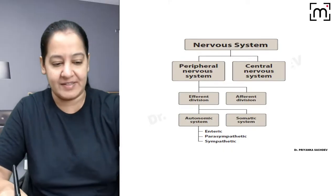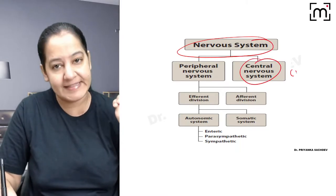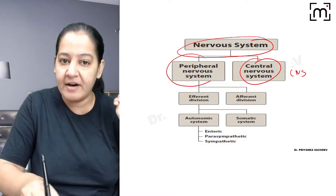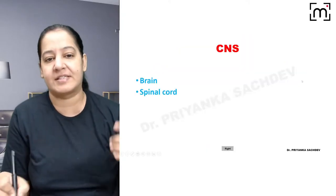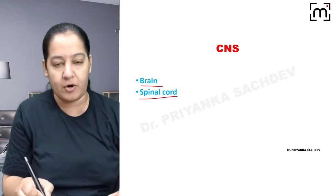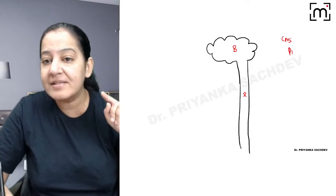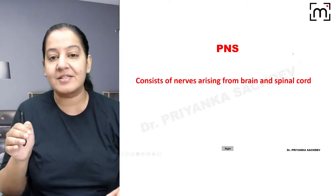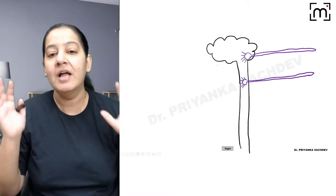Humans have a nervous system. The nervous system has two parts: the central nervous system, known as CNS, and the peripheral nervous system, known as PNS. In the CNS, we have the brain and the spinal cord. From the CNS, nerves arise — those nerves coming out constitute the peripheral nervous system.